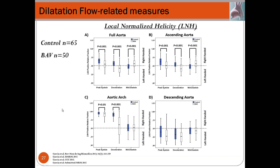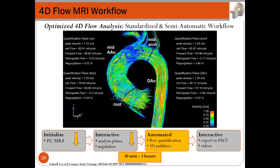With that in mind, I want to go back to the previous workflow for analyzing 4D flow MRI data. Looking at this standardized systematic approach, we also asked: what about reducing the time to initialize the 3D visualization using the 3D angiogram? If we reduce the time spent locating analysis planes along the thoracic aorta and automatize those steps — including flow quantification and animations — we can probably reduce the analysis time in an automatic way.